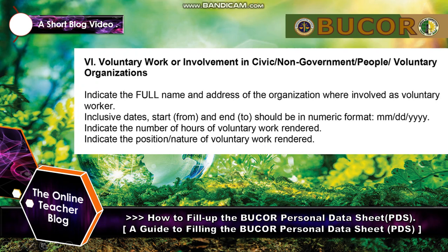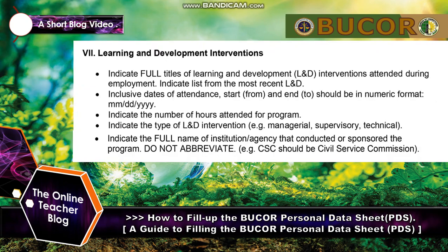Section 6 — Voluntary Work or Involvement in Civic, Non-Government, or People's Voluntary Organizations: indicate the full name and address of the organization where you were involved as a voluntary worker. Inclusive dates (from and to) should be in numeric format — month, day, and year. Indicate the number of hours of voluntary work rendered.